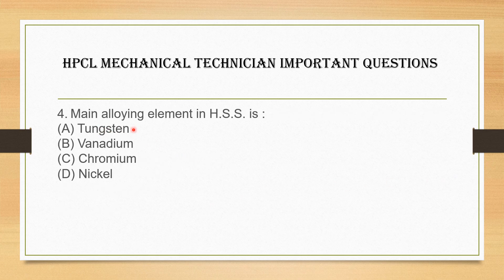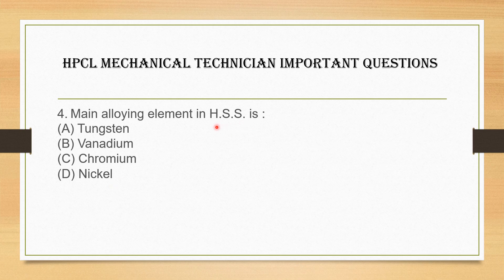Next question: what is the main alloying element in HSS (High Speed Steel)? Options are: A. Tungsten, B. Vanadium, C. Chromium, D. Nickel. The main alloying element in HSS is Tungsten.